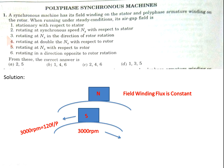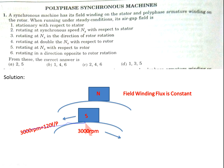Statement 2: air gap field is rotating at synchronous speed NS with respect to stator — that is wrong, we have seen that it is stationary. Statement 3: air gap field is rotating at NS in the direction of rotation — that is also wrong, because the direction of rotation and NS are opposite to each other.